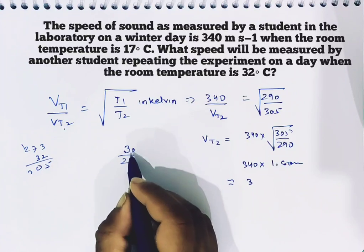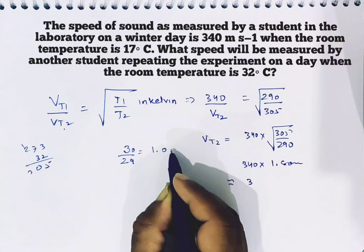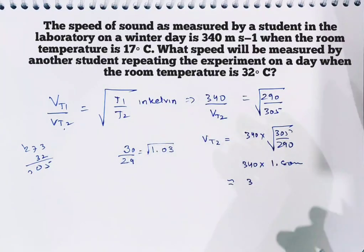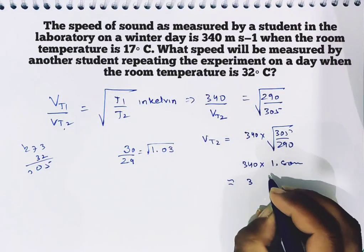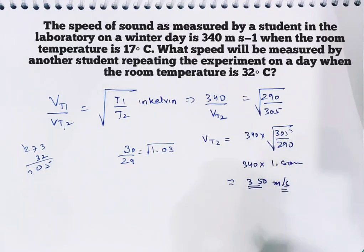You can calculate: 340 times 1.026 equals approximately 348 m/s. That is the answer to the question.